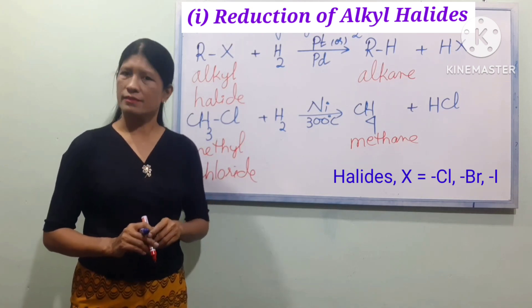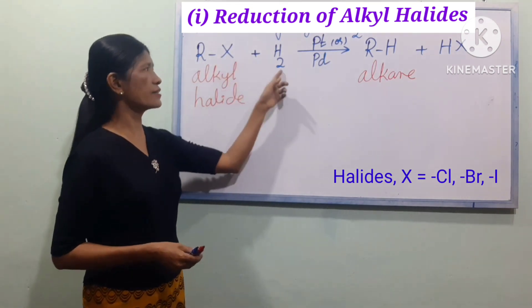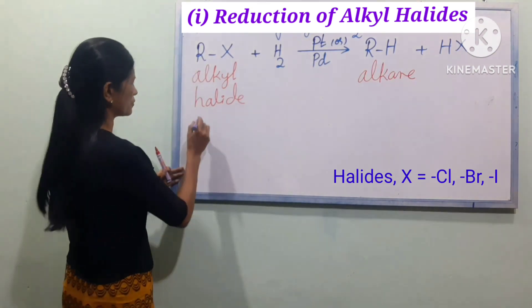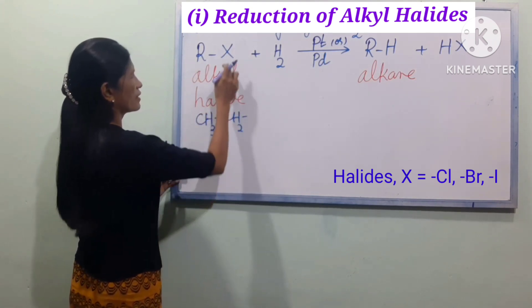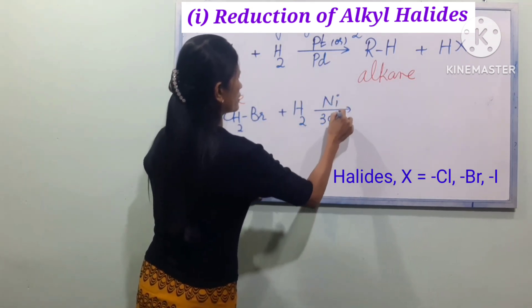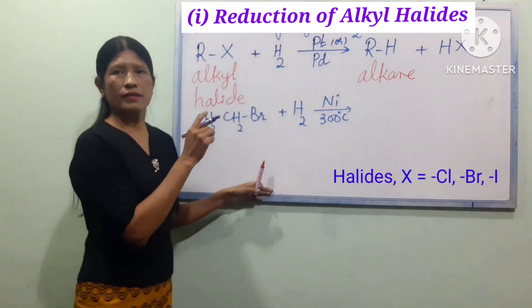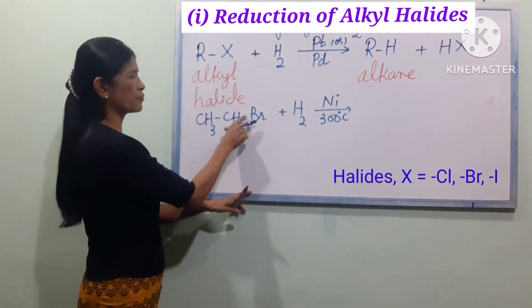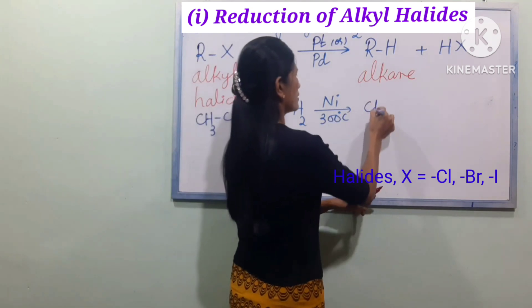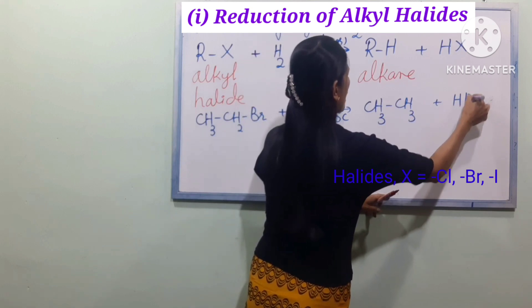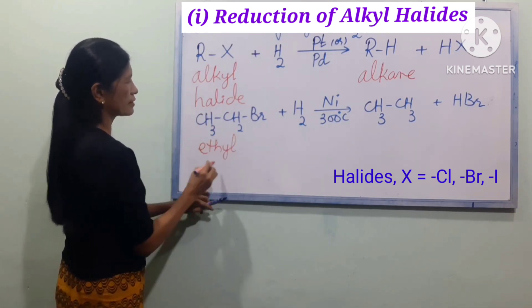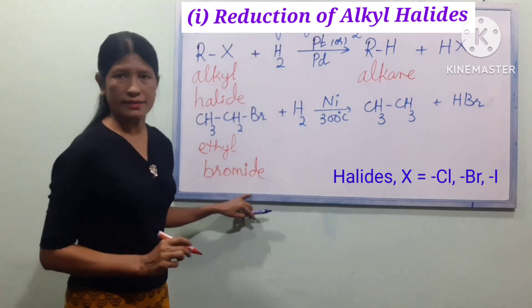So we can use methane. The new formulas: RX plus H2 with Pt catalyst gives RX plus HX. This formula equation will be written by R. CH3, CH2 plus H2. CH3 is the singly bonded H2 plus HB. This is bromide — ethyl bromide.